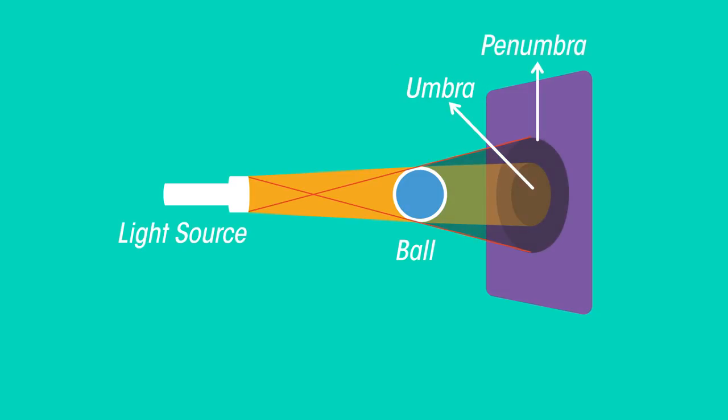The umbra of a shadow is in the centre and is the darkest part of the shadow. The penumbra is an extended part of the shadow that is slightly lighter than the umbra.